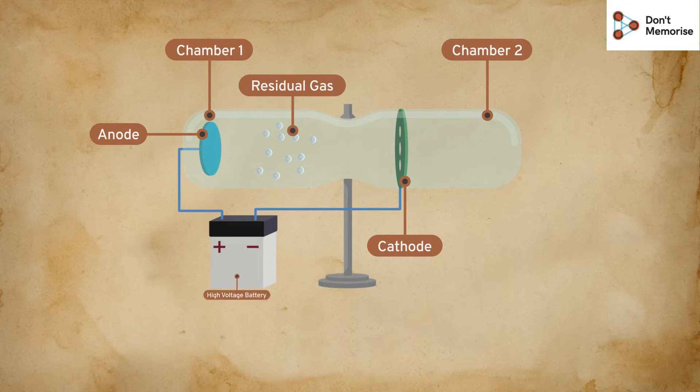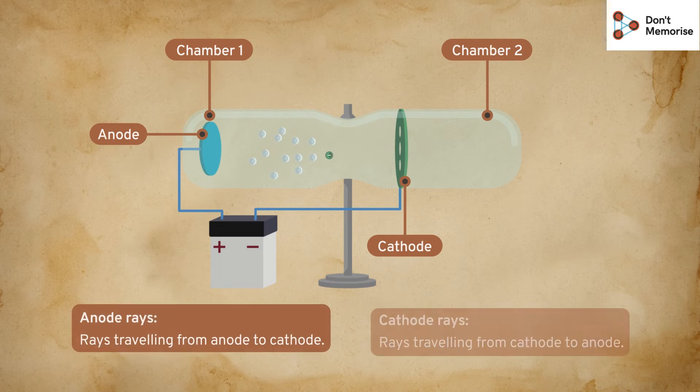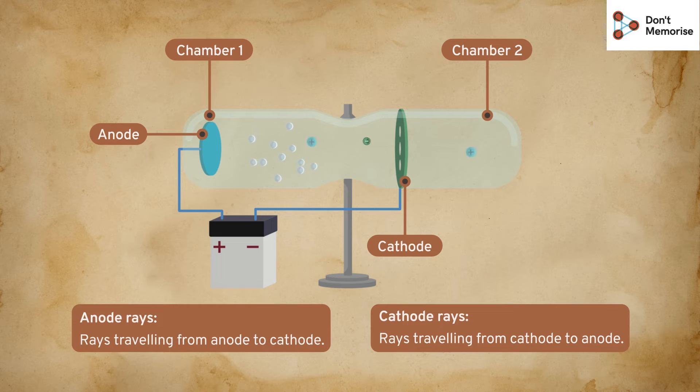When he applied voltage, cathode rays began to move from the cathode to the anode. When they struck a gas molecule on their way, it emitted charged particles.